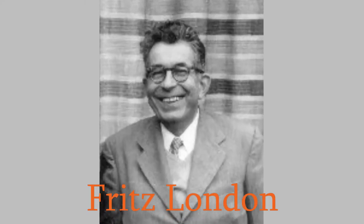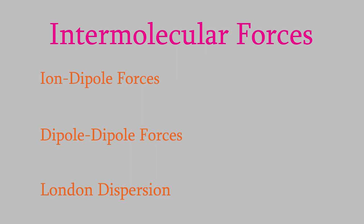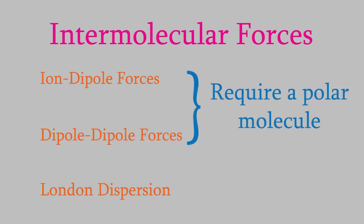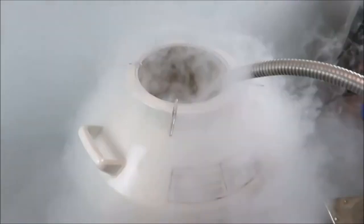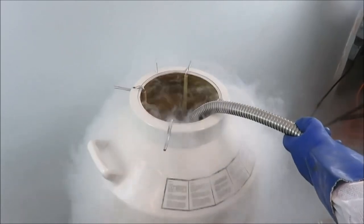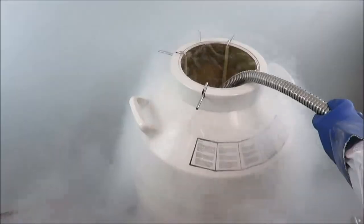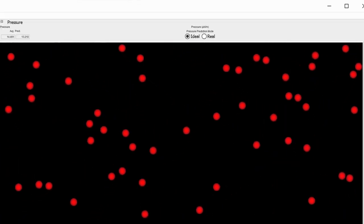Fritz London was a German physicist, and because of the rise of the Nazis, he emigrated from Germany in 1939 and came to the US, where he became a professor at Duke University. That makes him one of many refugees who made groundbreaking contributions to science in the United States. Even though London dispersion is a weak force, it's still very important for thousands of different substances. Nonpolar molecules can never experience ion-dipole or dipole-dipole forces, so London dispersion is the only attraction that nonpolar atoms and molecules can feel for each other. And that's why liquid nitrogen can exist — nitrogen molecules can never experience dipole-dipole or ion-dipole forces, but they do feel London dispersion attracting them to each other. That allows them to stick together and form a liquid.